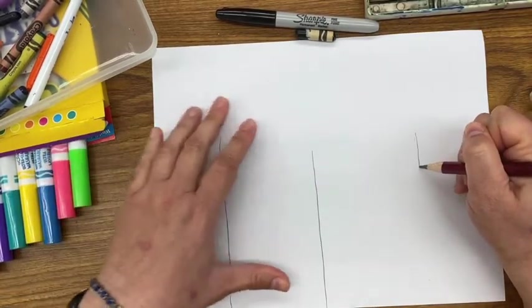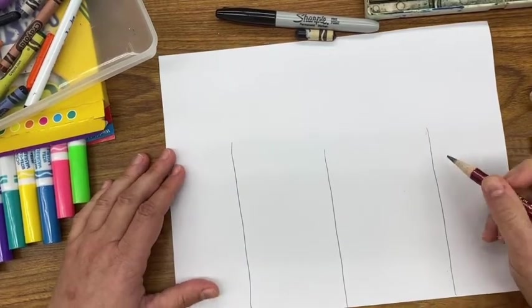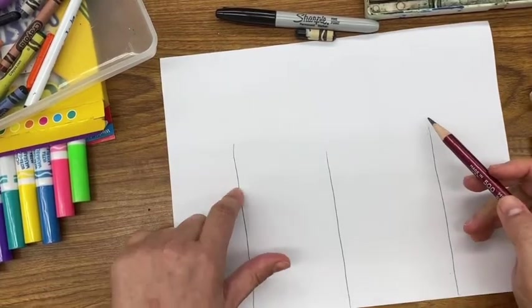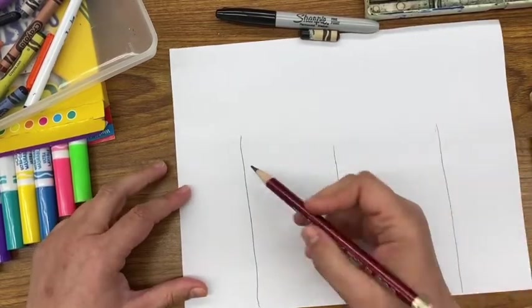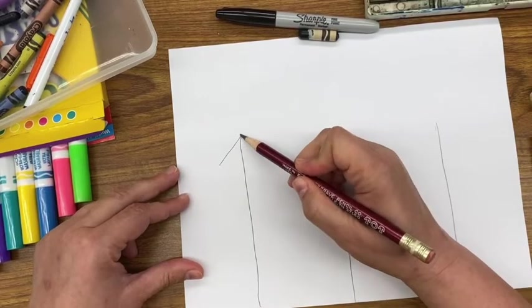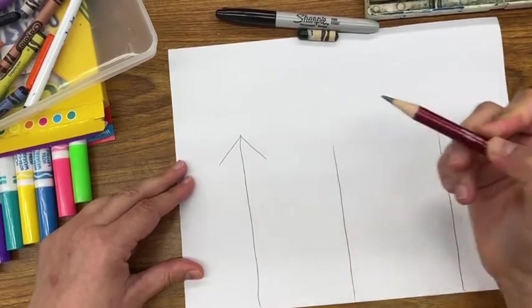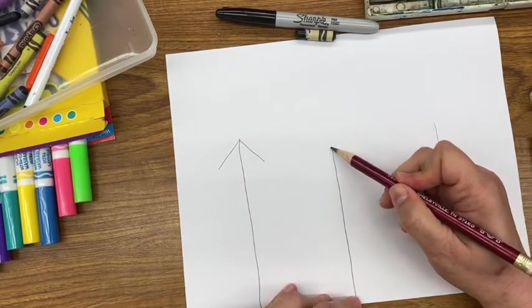Then on each vertical line, you're going to draw two diagonal lines or an upside-down V going from the top of your vertical line. So you're going to draw two diagonal lines or an upside-down V. It'll look like arrows pointing upward.